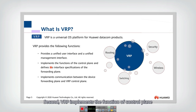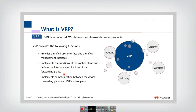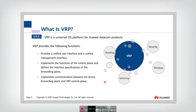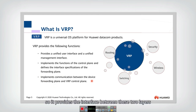Second, VRP can implement the functions of the control plane and defines the interface specifications of the forwarding plane. Third, VRP can implement communication between the device forwarding plane and control plane, providing the interface between these two layers.